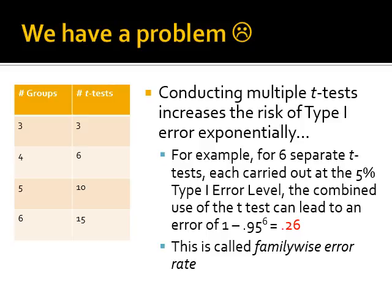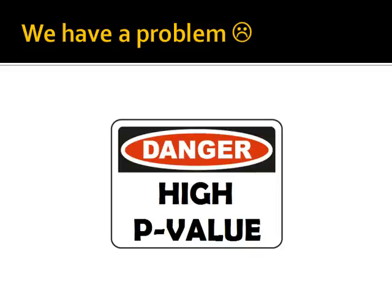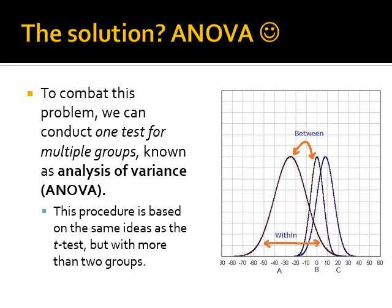You can see from the table to the left that as the number of groups increases, the number of t-tests increases exponentially. With three groups you only need three t-tests, but with four groups you need six, five groups ten, six groups fifteen. After a while, if you have six groups, you're running 15 t-tests, and that can lead to a dramatically large error rate — one that you can't really live with as a researcher. So what do we do about this problem of having a too-high error rate? The solution is known as analysis of variance, or ANOVA.